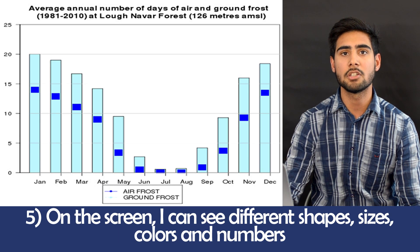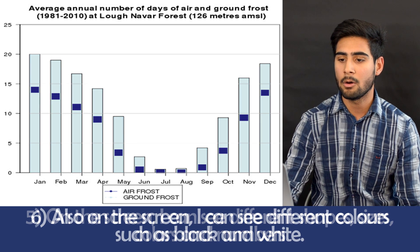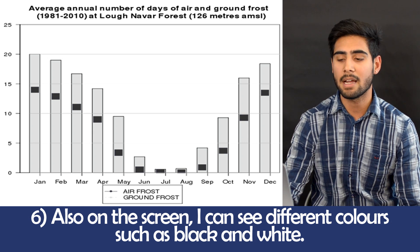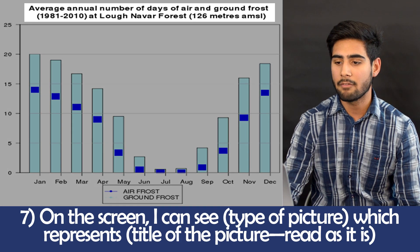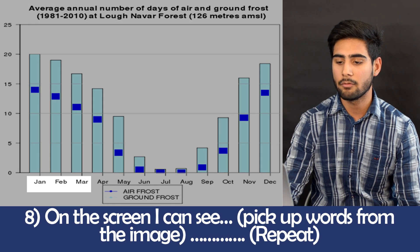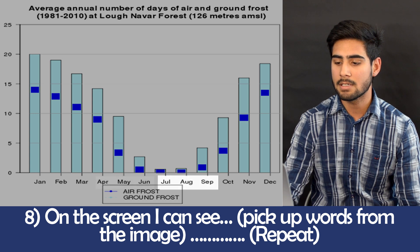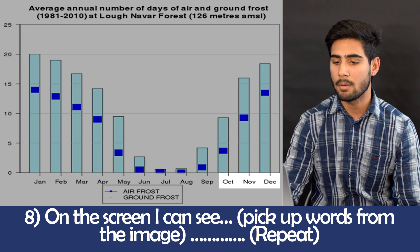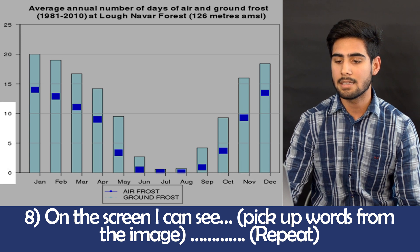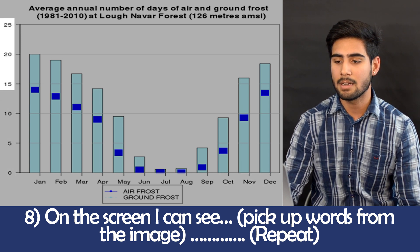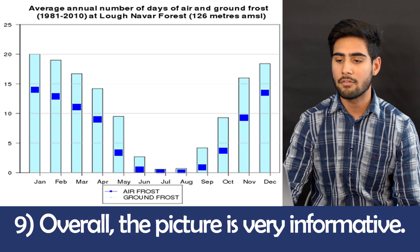On the screen, I can see different shapes, sizes, colors and numbers. I can see different colors such as black and white. I can see the average annual number of days of air and ground frost from 1981 to 2010. I can see months from January through December listed across the chart. I can also see values such as 0, 5, 10, 15, 20 and 25. Overall, the graph is really informative.